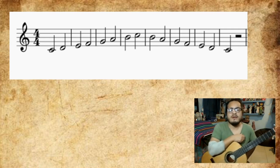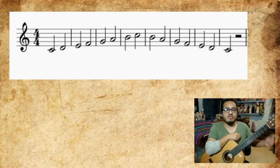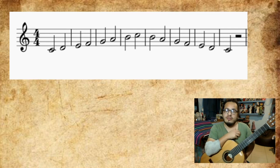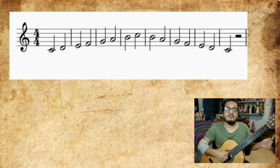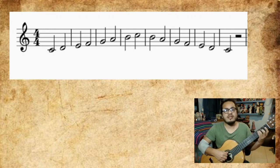Primeramente tenemos en el primer compaso a nota Do. Esa nota Do se encuentra, como ya hemos repetido, en la quinta cuerda casa tres, con el dedo tres. Presionamos a quinta cuerda contra casa tres con el dedo tres y pulsamos con el indicador.